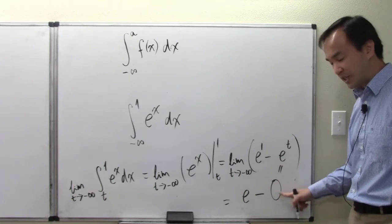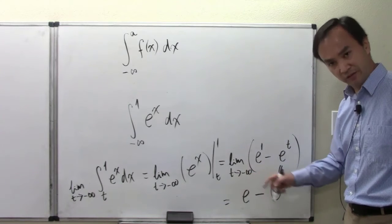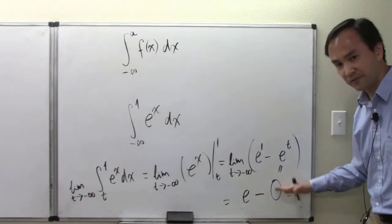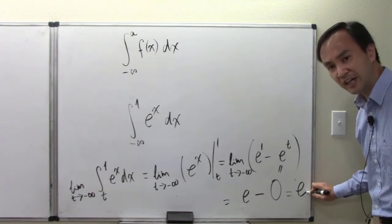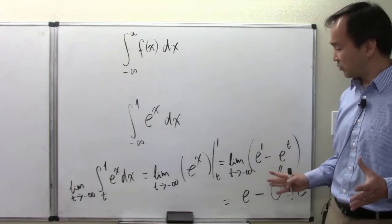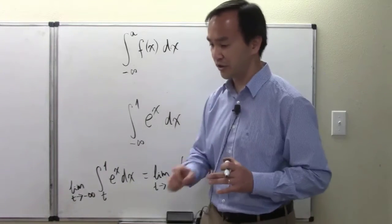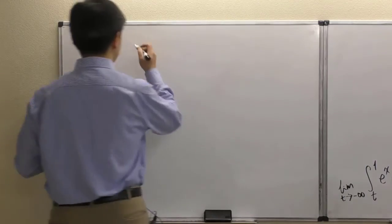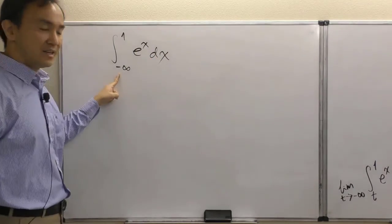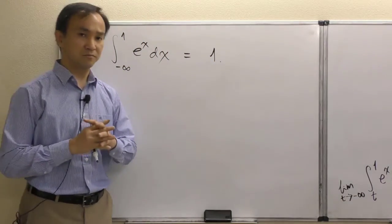I highly recommend reviewing your calculus one material to understand why e to the t goes to zero as t approaches negative infinity. In the end, the limit concludes to a finite value. The answer to the limit problem is e minus zero, which equals e.